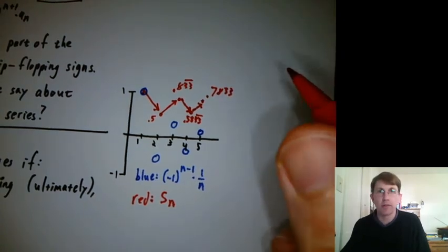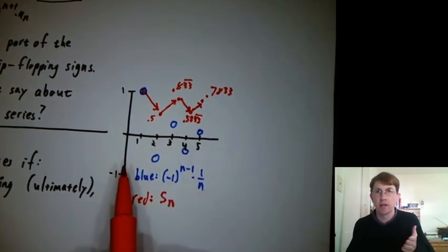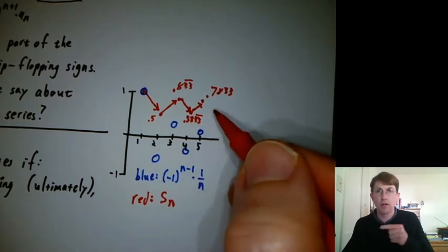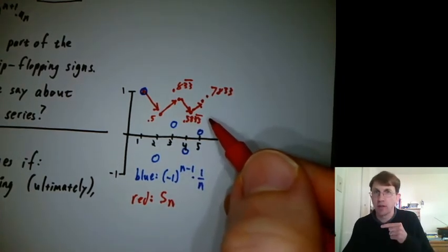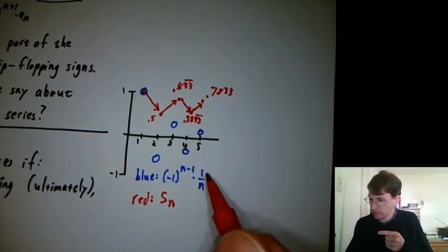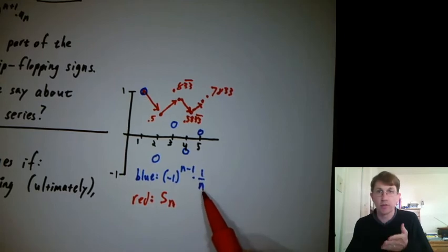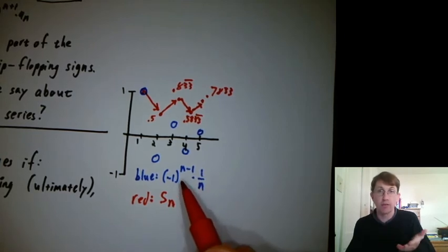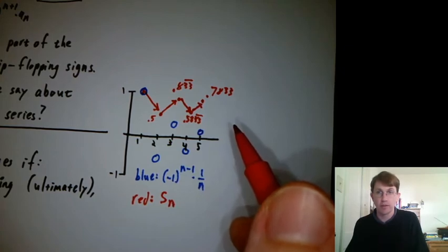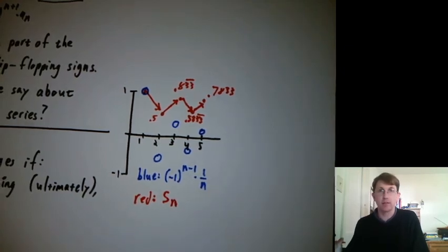So what seems like it's going to happen as I move more and more terms on? I'm going to keep moving up and down and up and down, but a little less each time. And so does it make sense that that should converge? So this is the harmonic series all by itself, if it's just 1 over n, it's harmonic. But here's the alternating harmonic, and it seems like it's going to converge. So that's what the alternating series test tells us.